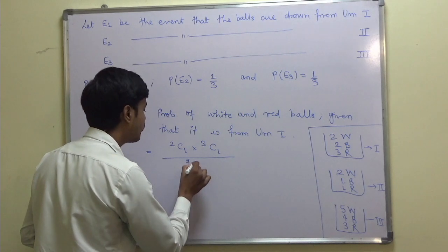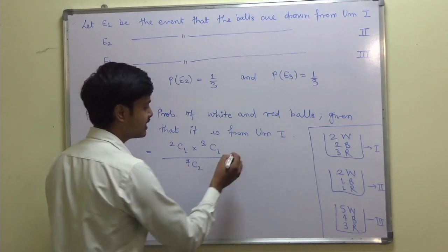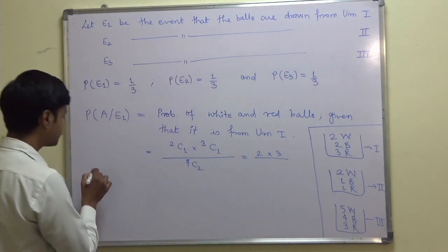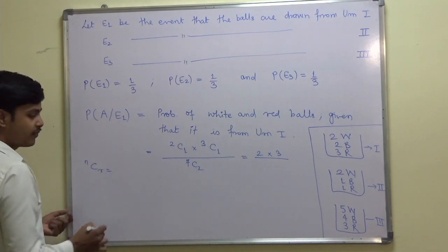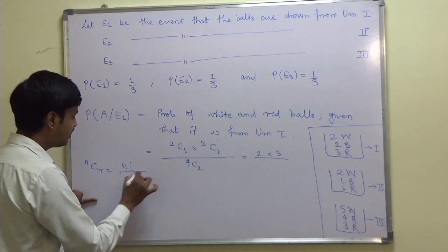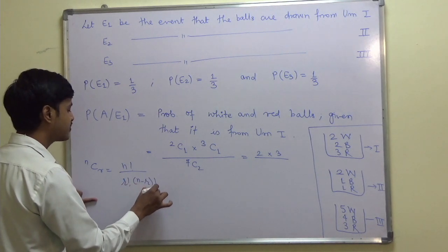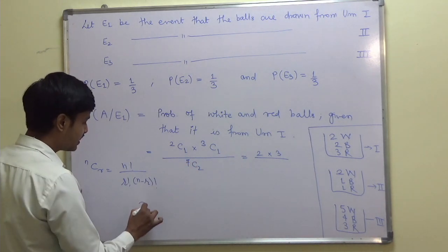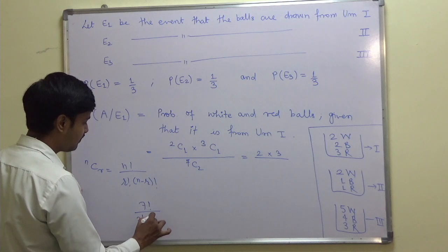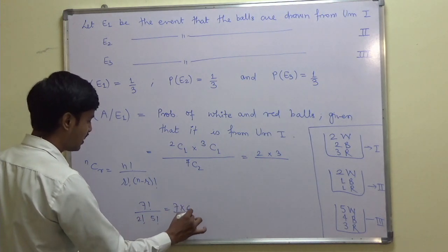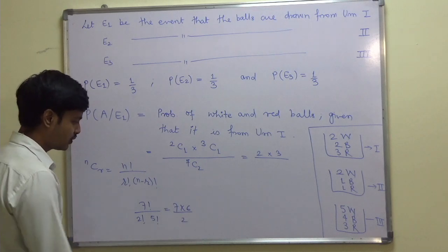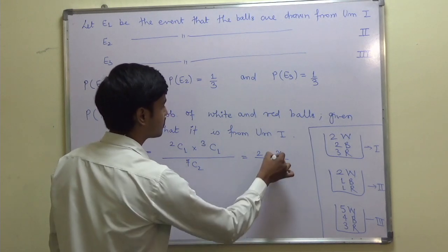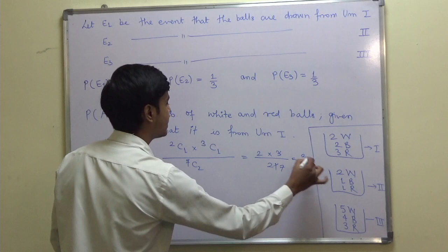Out of 7 balls I want 2. So 2C1 is 2, and 3C1 is 3, giving 2 times 3 in the numerator. For 7C2: using the formula NCR = N factorial divided by R factorial times (N minus R) factorial, we get 7C2 = 7 times 6 upon 2, which equals 21. So P(A|E1) = 6 upon 21, which simplifies to 2/7.